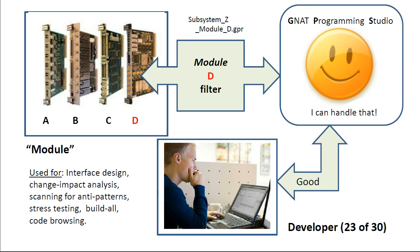Continuing the analogy with hardware, subsystems contain modules, which, like subsystems, also communicate via middleware and thereby avoid direct compilation dependencies with each other. The module view is useful for designing local and intermodule interfaces, performing change impact analyses, scanning for anti-patterns, stress testing, and so on. By filtering out all sources not related to the selected module, the demands on the workstation are greatly reduced and the developer only sees the code that matters. Source code filtering is accomplished using features of the GANAP toolchain, which requires the GANAP Project Manager and a scripting language to automate the various steps in the algorithm.